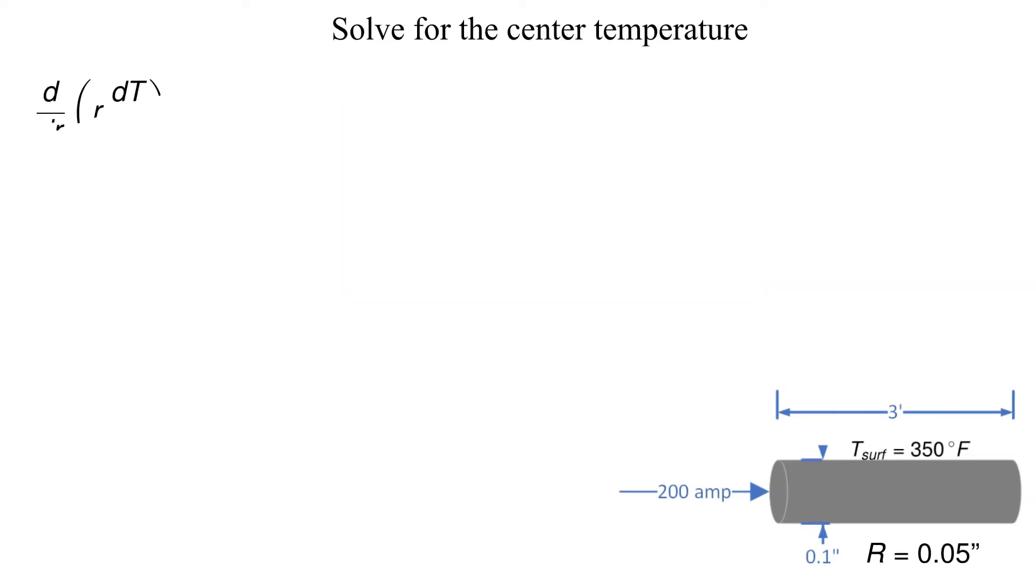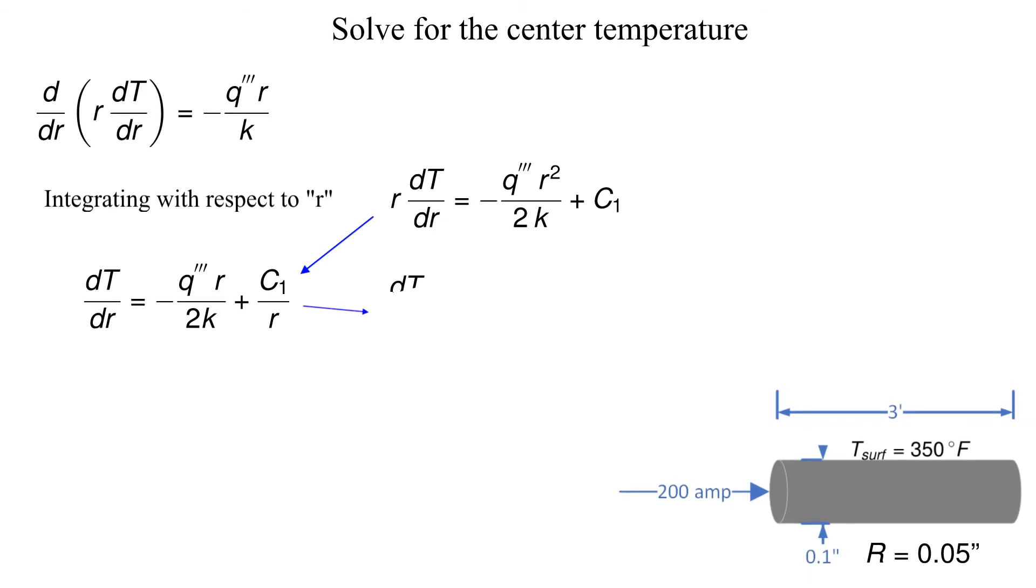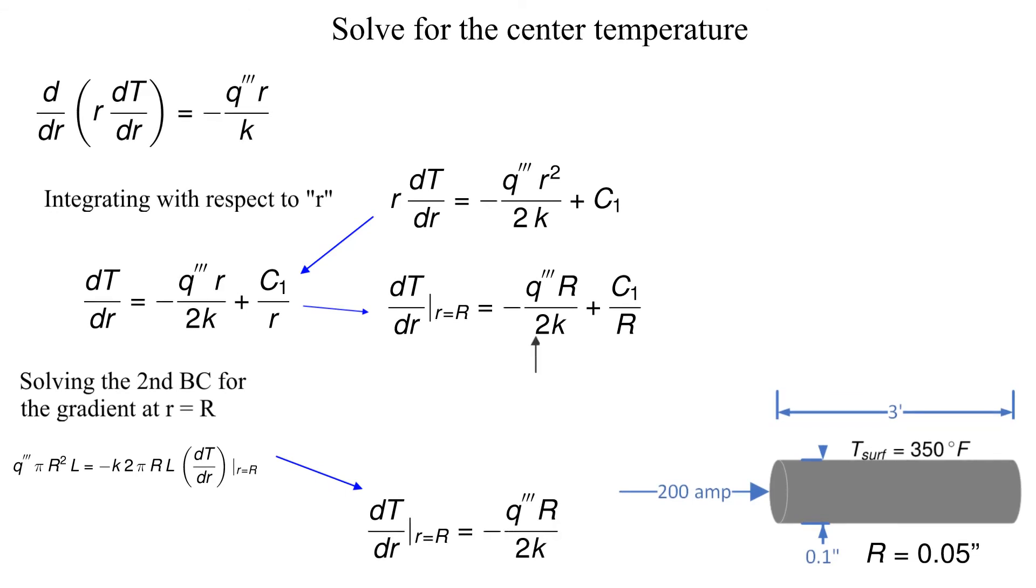The first integration with respect to the radius is shown. To determine the integration constant we solve the equation for the second boundary condition for the temperature gradient and compare to the resulting equation from the integration of the heat conduction equation. The comparison indicates that c1 must be equal to zero.